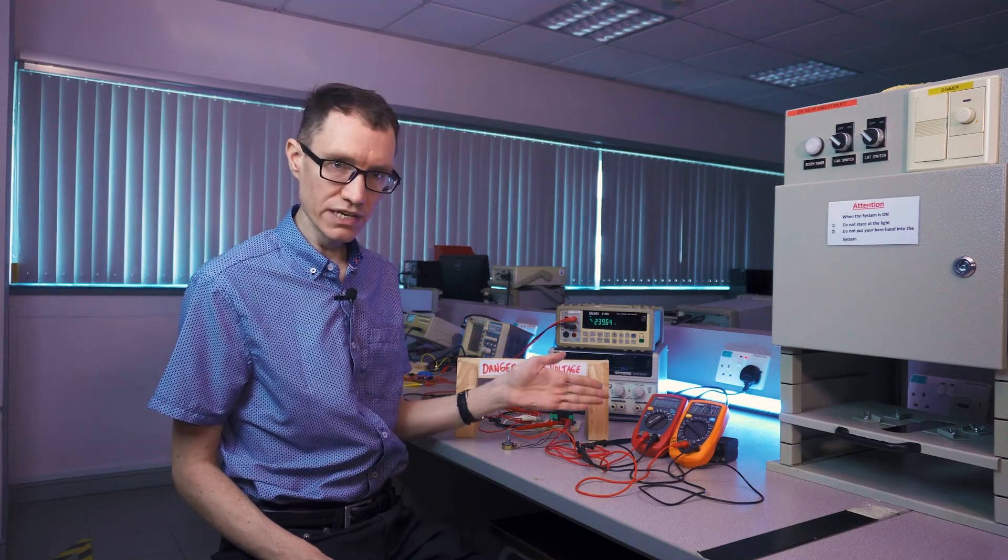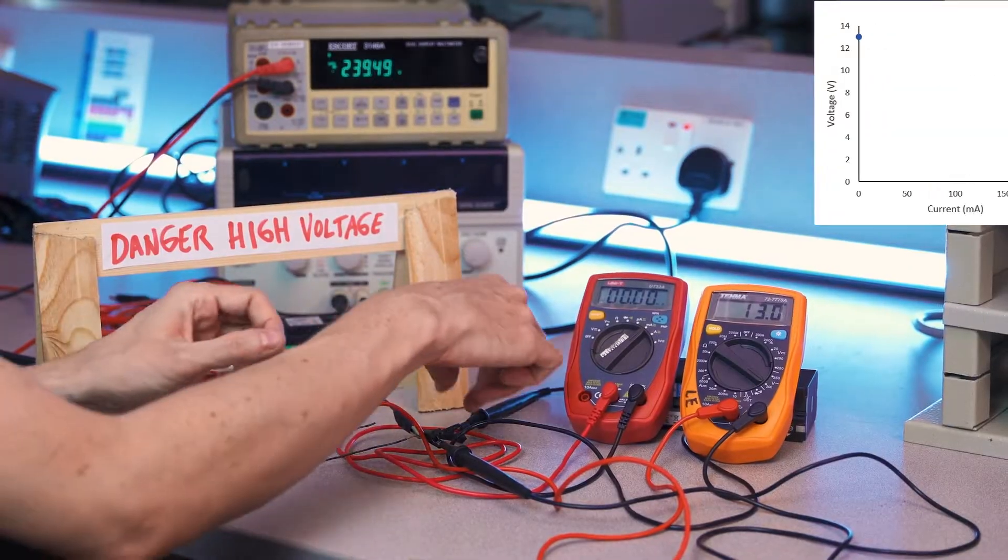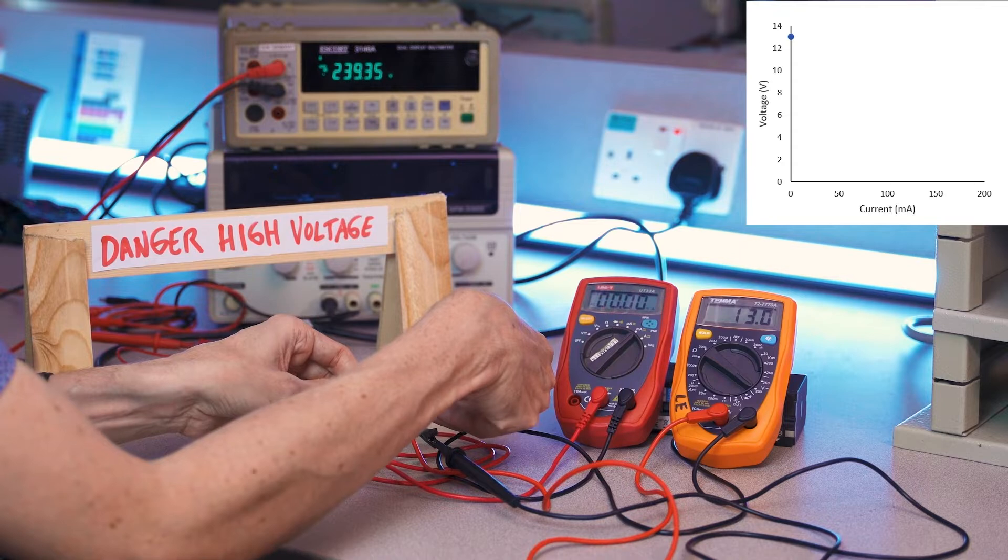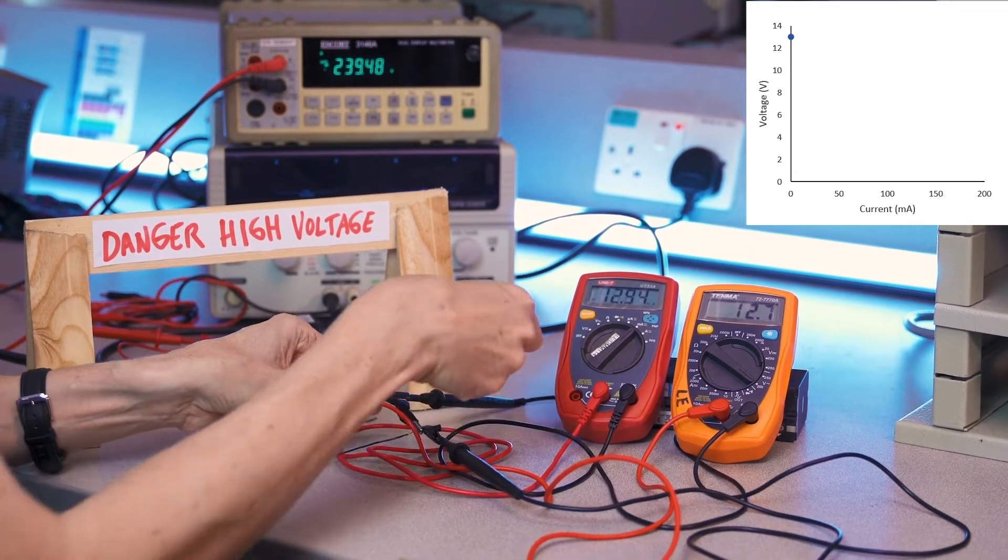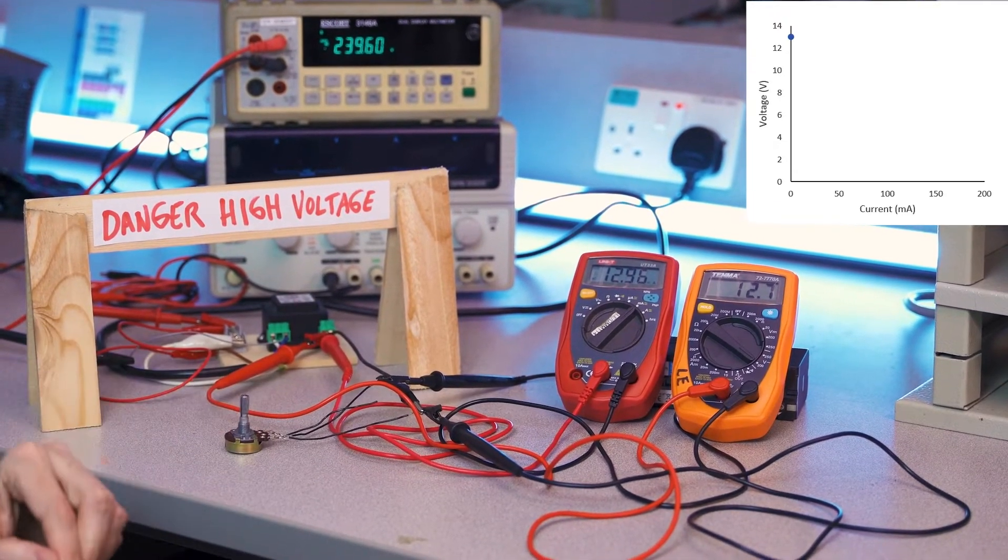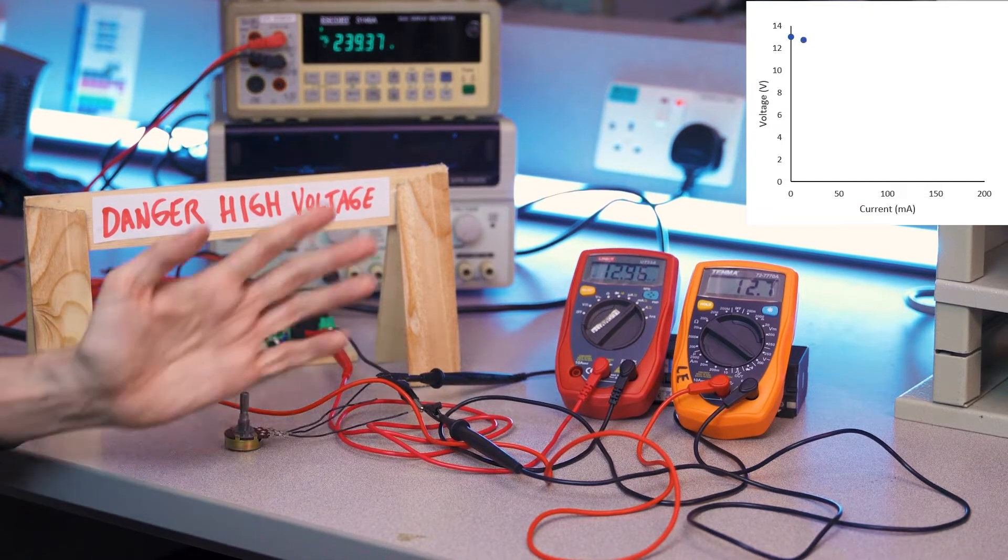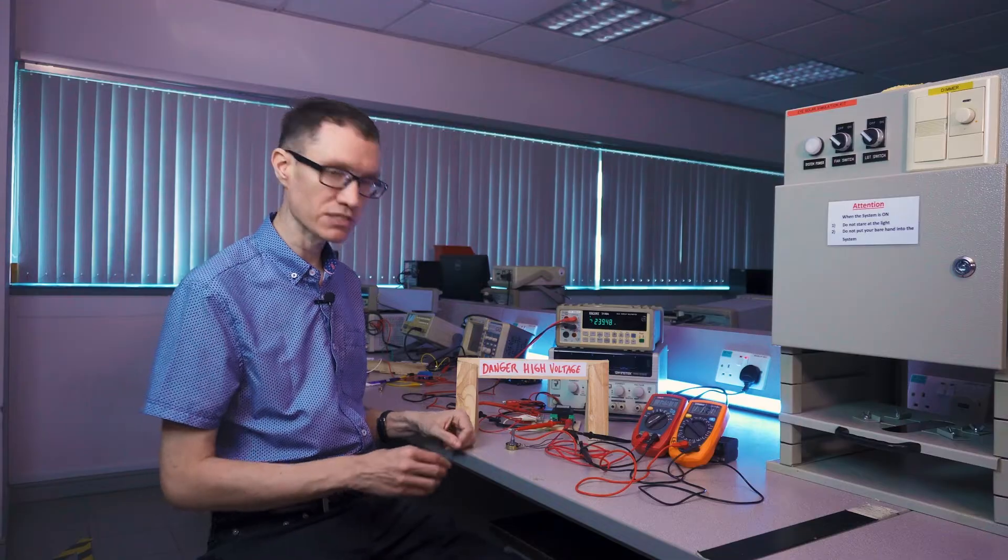Without any current flowing through the secondary side of the multimeter, we're measuring 13 volts. I'm going to hook up our potentiometer here on the secondary side. At 12.7 volts, we have nearly 13 milliamps flowing. Let's reduce the resistance.